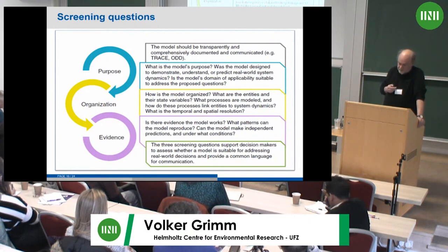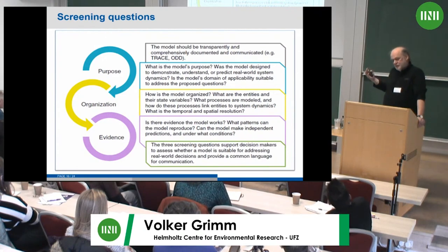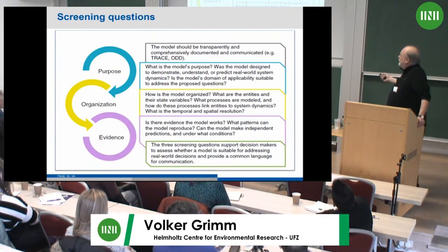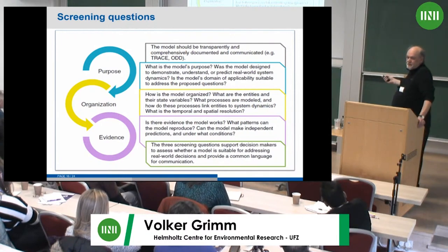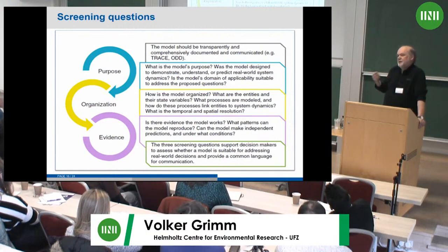Organization: what is in the model? What kind of variables, what spatial scale and extent, what temporal scale, what processes are included? For example, if you have a COVID-19 model without transportation in the model, it's a very different kind of model — you should know about it. And of course, the evidence: is there evidence the model works? What kinds of observations does it reproduce? And are there independent predictions not put into the model from the beginning?